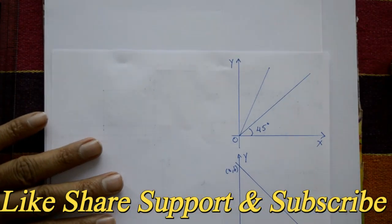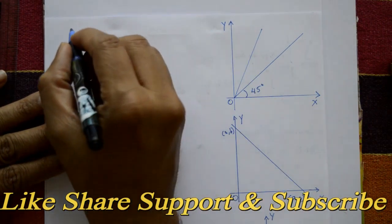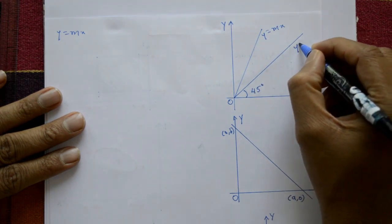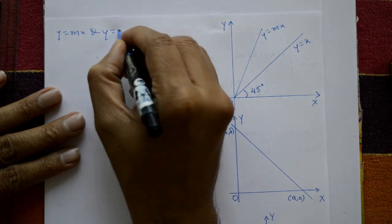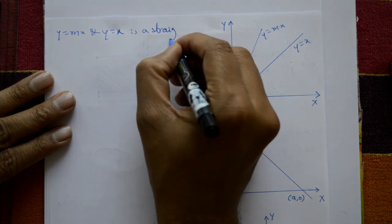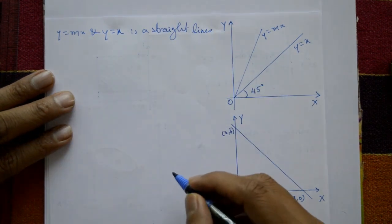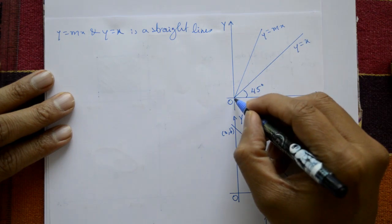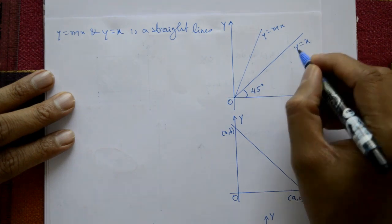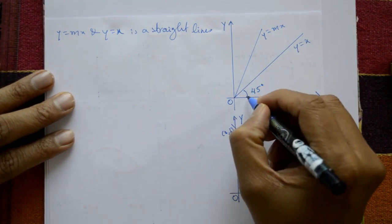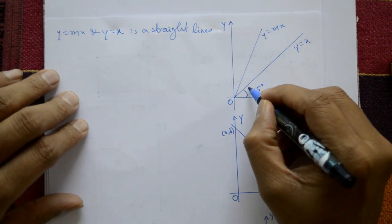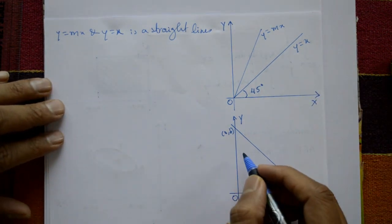Next diagram: y equals mx and y equals x are both straight lines. y equals mx passes through the origin, and y equals x also passes through the origin at exactly 45 degrees — dividing the first quadrant into equal parts.